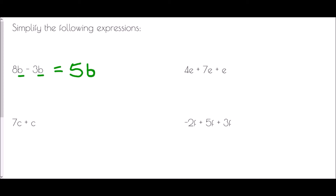If I had 7C plus C - this is an important feature. If you see a letter all on its own, that is because we don't generally write the number one in algebra, just as in real life we don't say 'I have one pencil', we'd just say 'I have a pencil'. So if we see a letter on its own it means one of them. 7C plus C means 7C plus 1C, which gives us 8C.